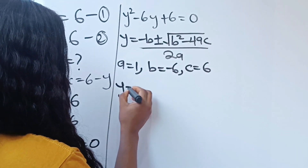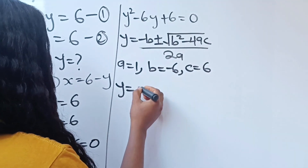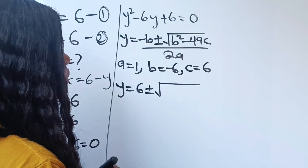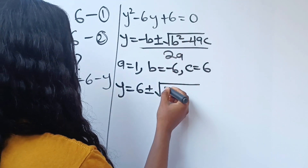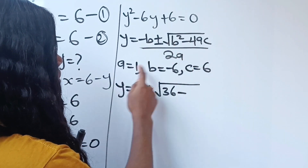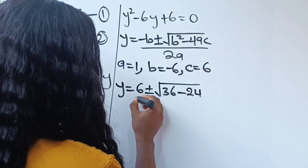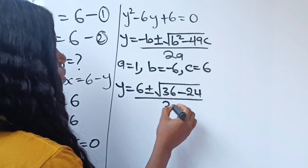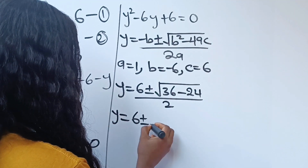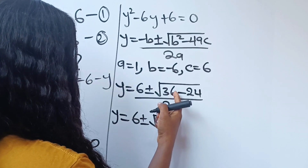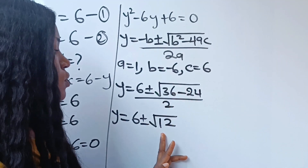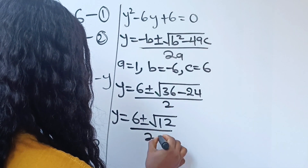Now let's substitute. Our y equals minus minus 6, which becomes plus 6, plus or minus square root of b squared — that is minus 6 squared — which becomes 36, then minus 4ac, that is 4 times 1 times 6, which gives us 24, divided by 2a, which is 2 times 1, giving us 2. So we have y equals 6 plus or minus square root of 36 minus 24, giving us root 12, divided by 2.